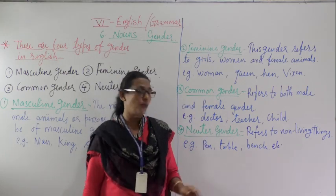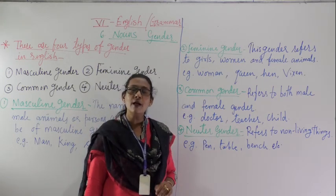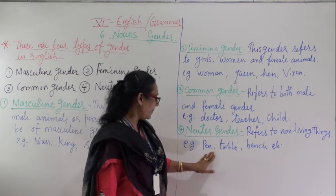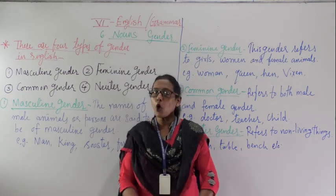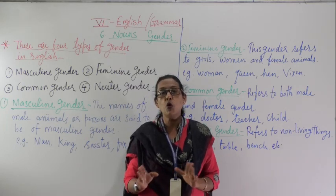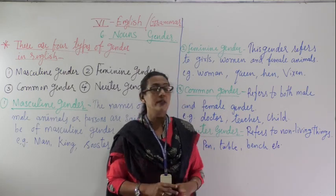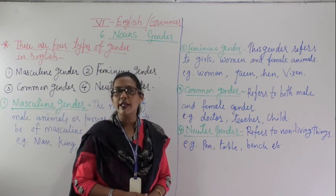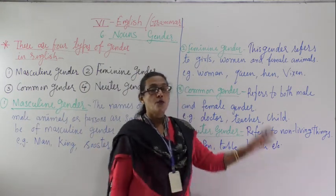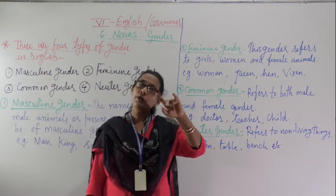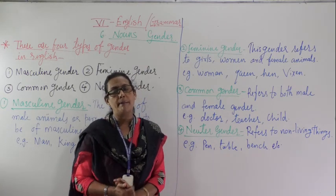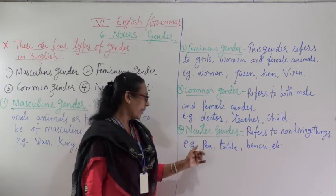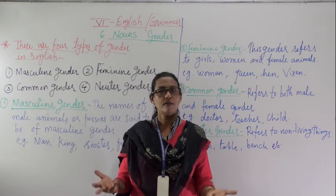Now the fourth and last gender is Neuter Gender. Neuter Gender refers to non-living things — things that are lifeless, with no life in them. For example: pen, table, bench, cooler, fan. We can say anything that is a non-living, lifeless thing belongs to Neuter Gender.